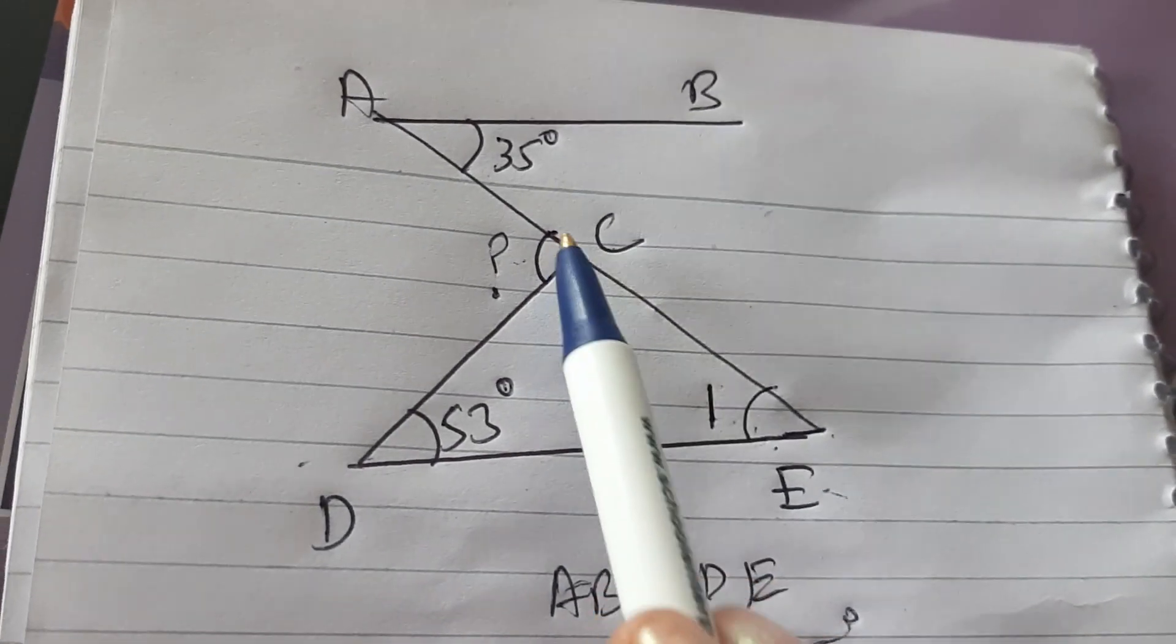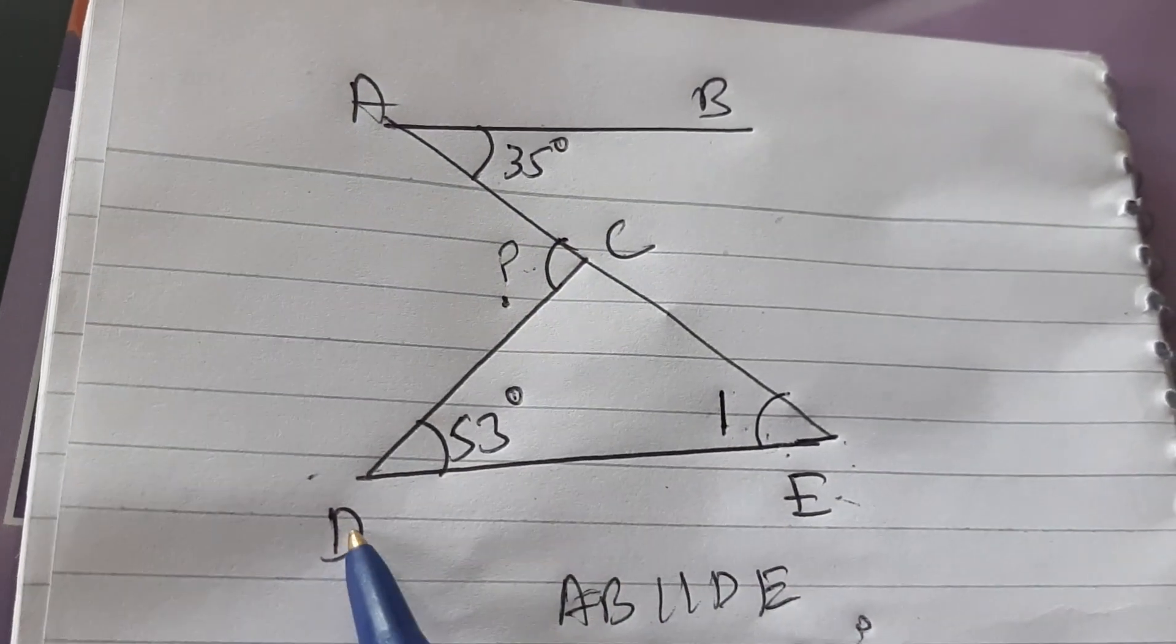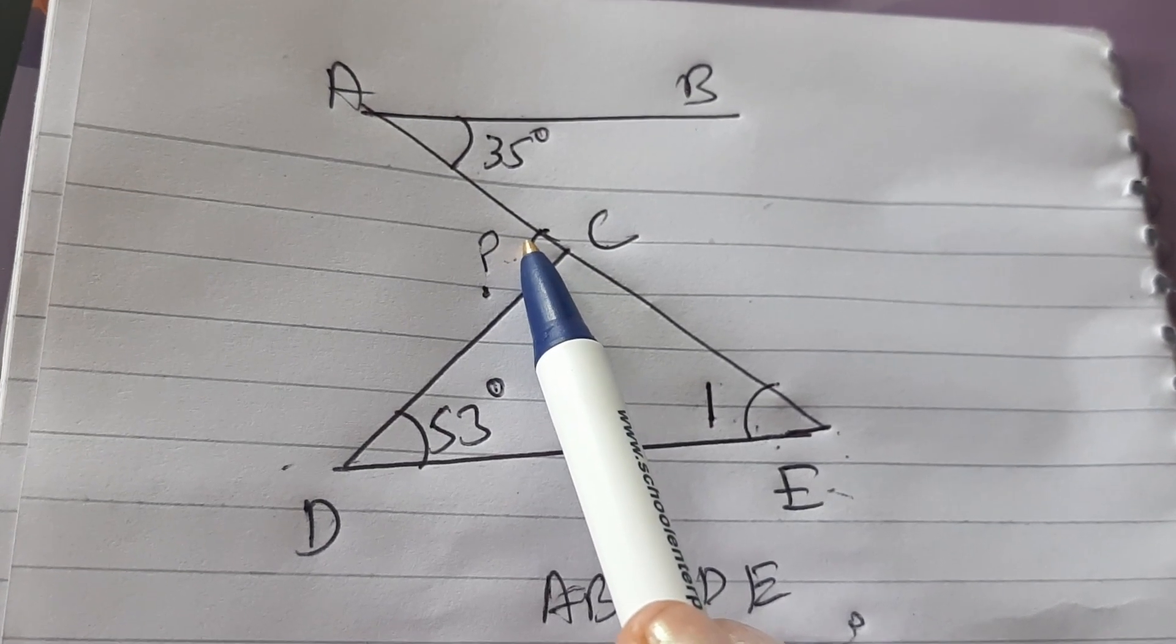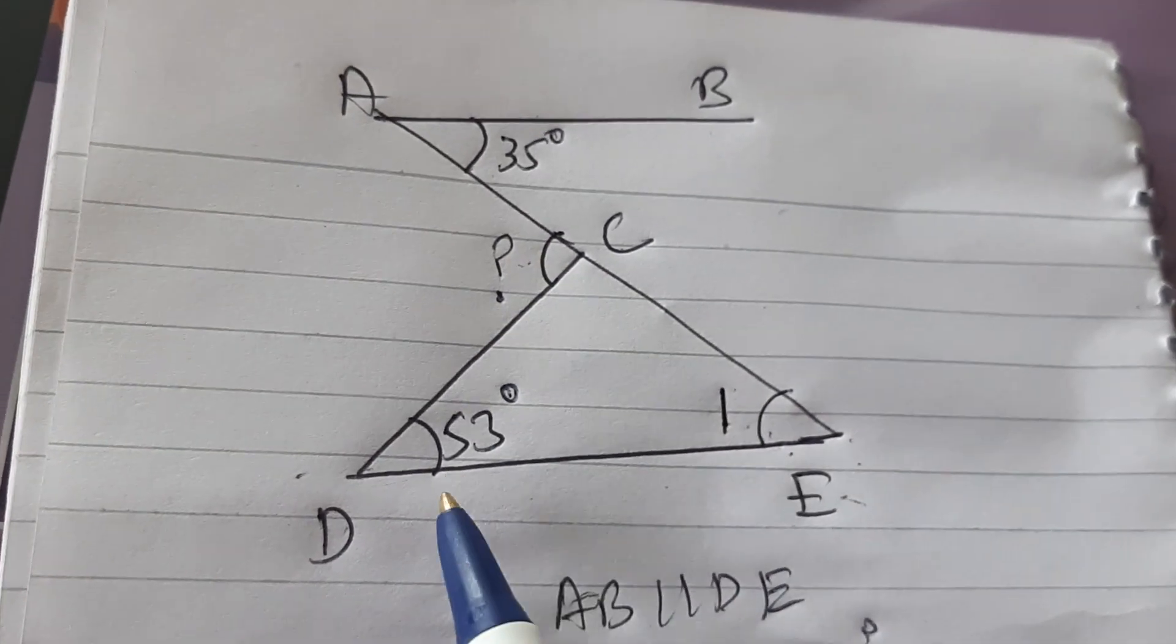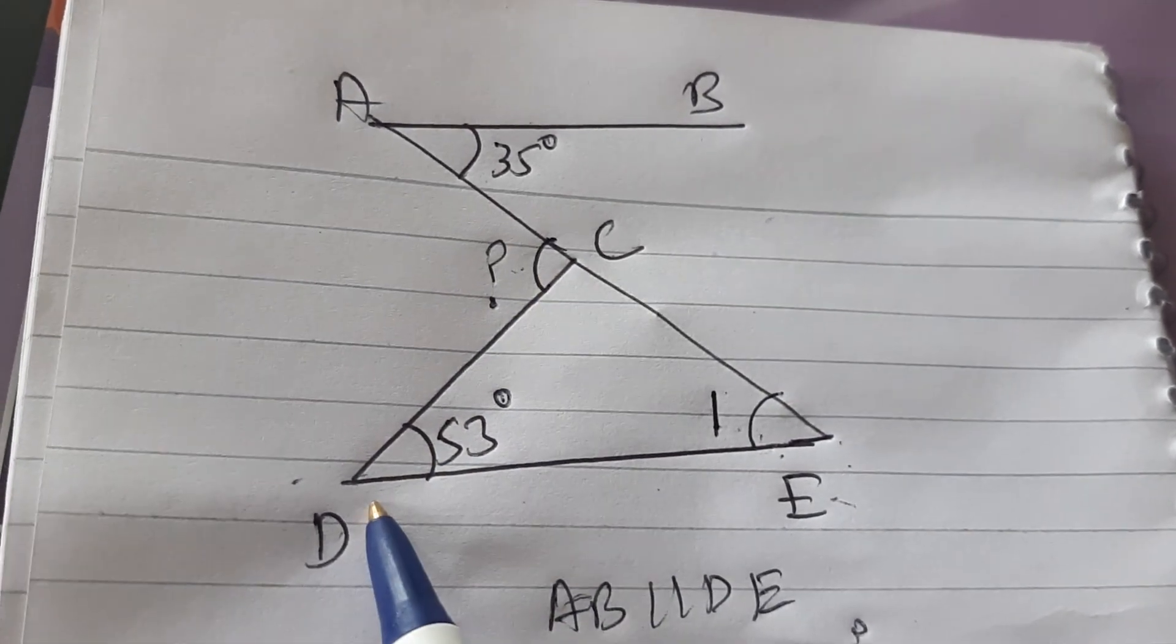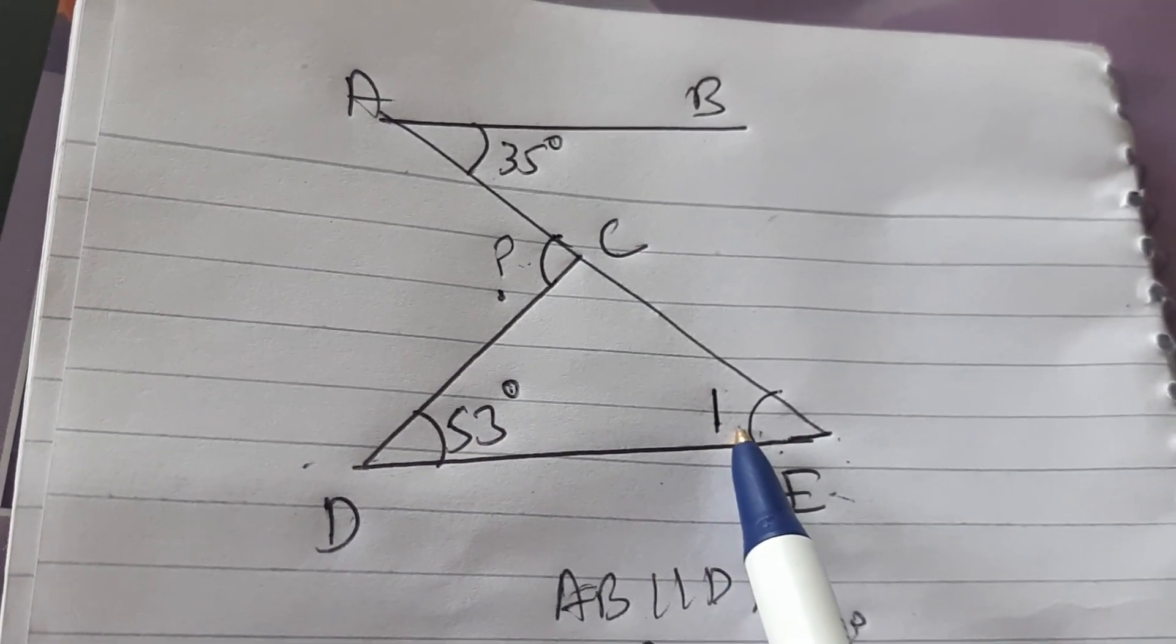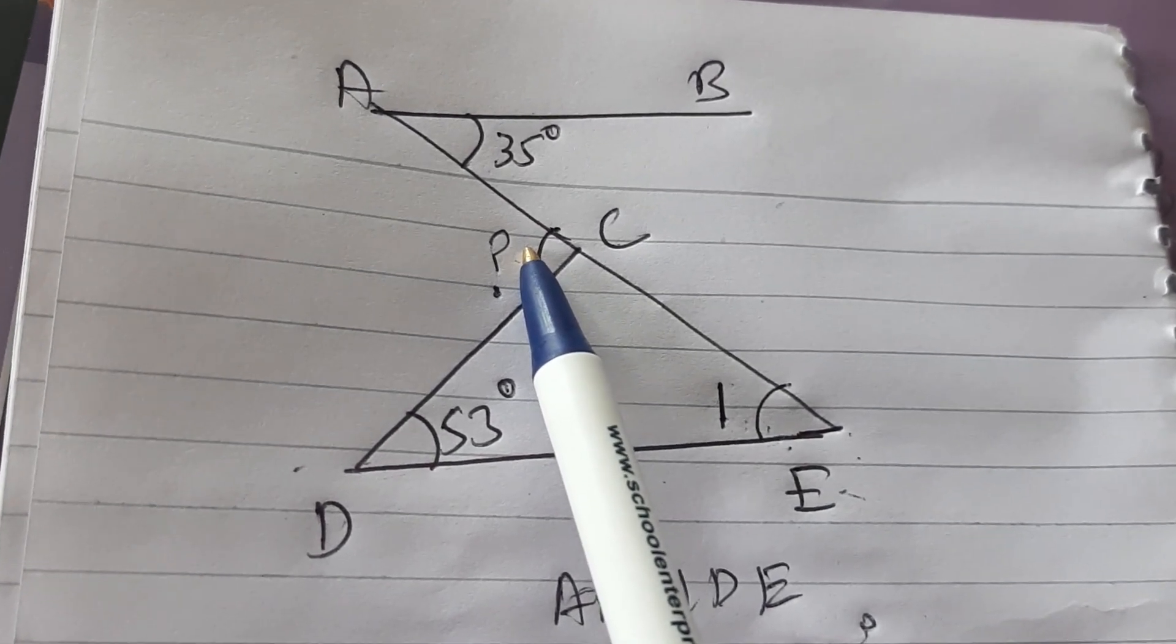Now observe triangle CDE. Angle ACD is exterior angle. So what will this exterior angle equal to? You are right. Exterior angle of a triangle is equal to the sum of interior opposite angles. So angle ACD will be equal to 53 degrees plus angle 1 and angle 1 is 35 degrees. So 53 degrees plus 35 degrees which is equal to 88 degrees. Angle ACD will be equal to 88 degrees.